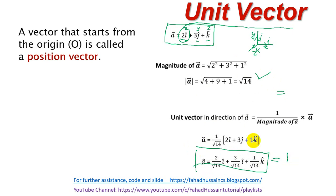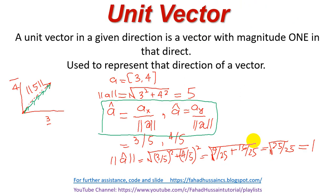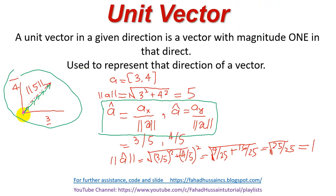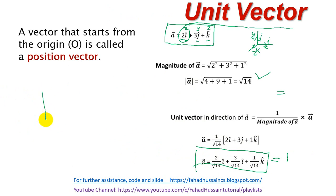Now let's understand the position vector. Actually, the position vector is what we have been plotting here. It is called a position vector because a vector that starts from the origin is called a position vector. When we start a vector from the origin point, and it has a direction and distance value, that is your position vector.